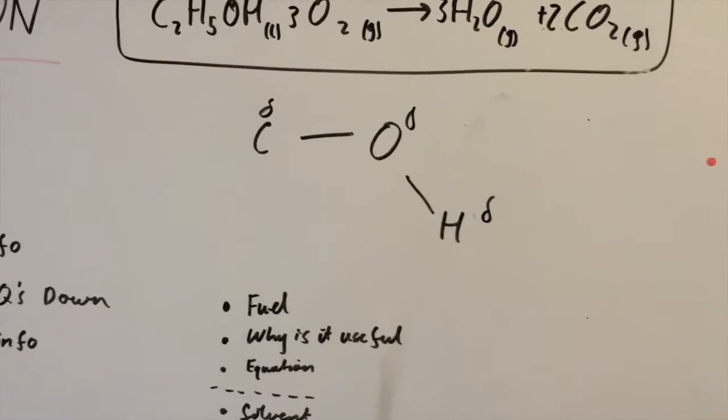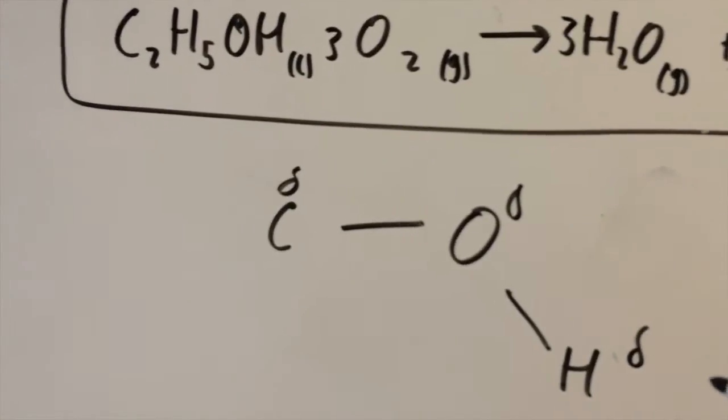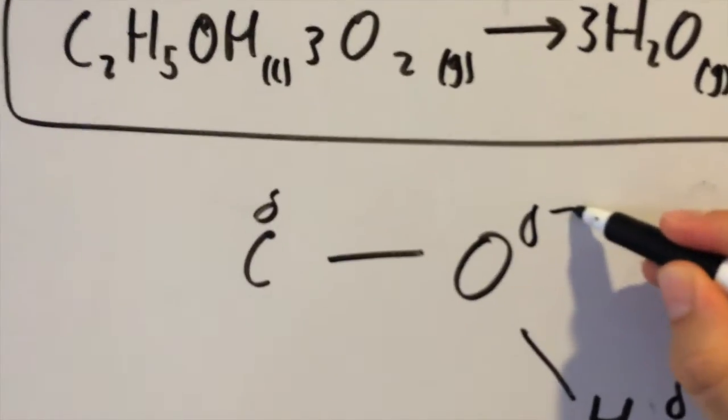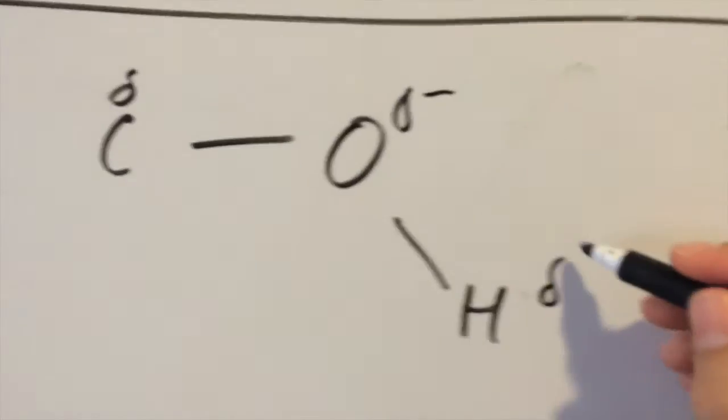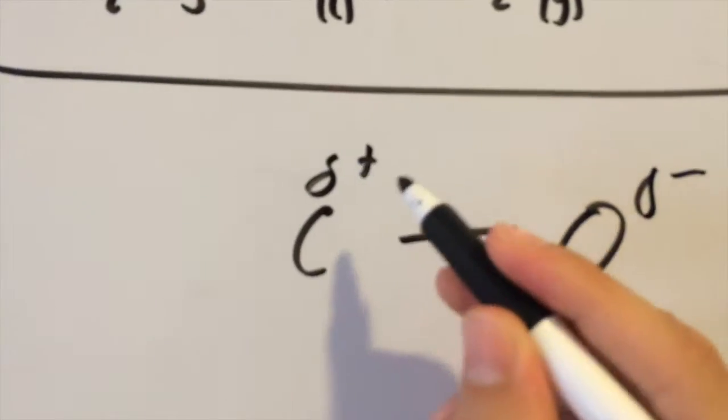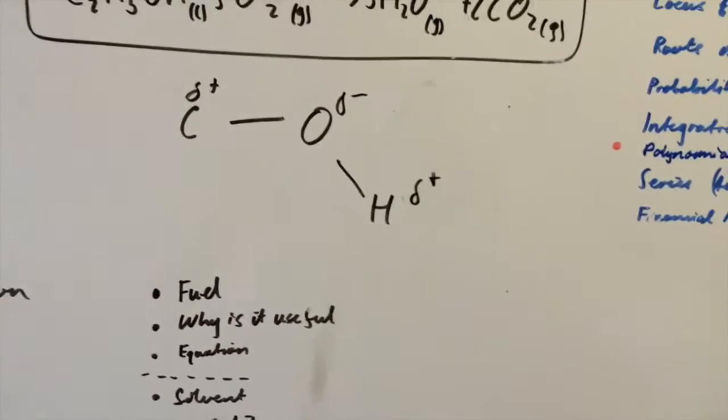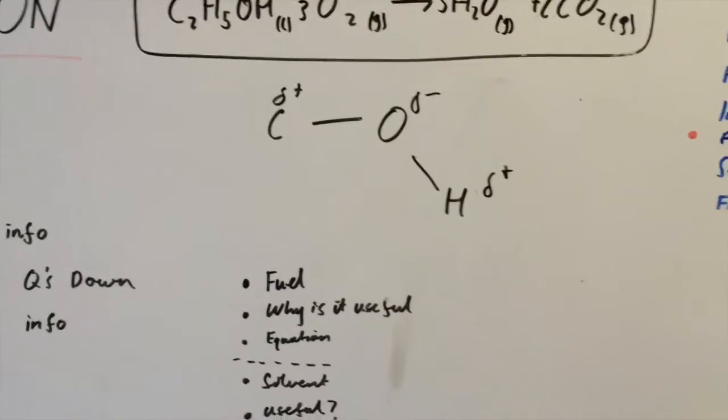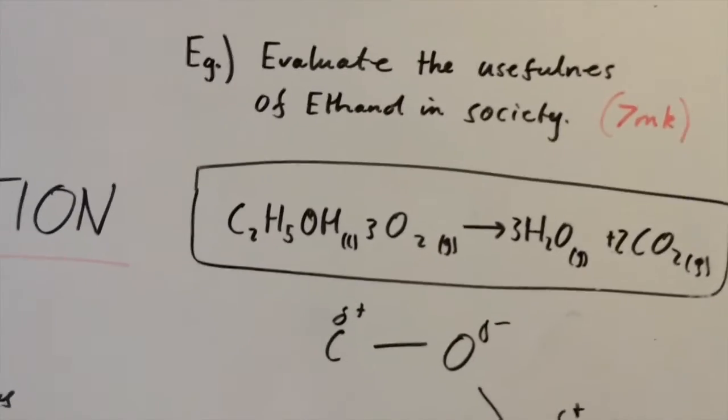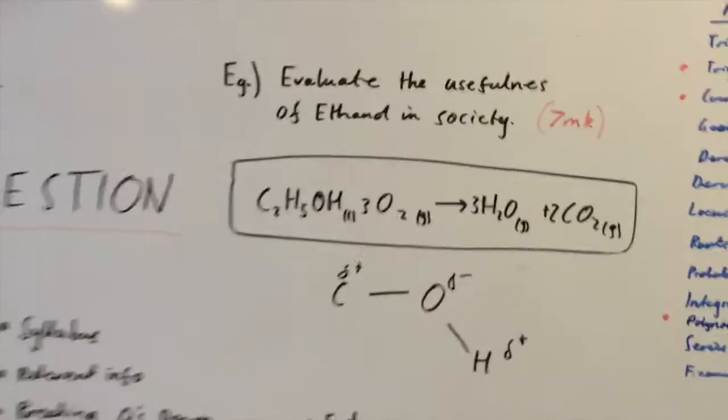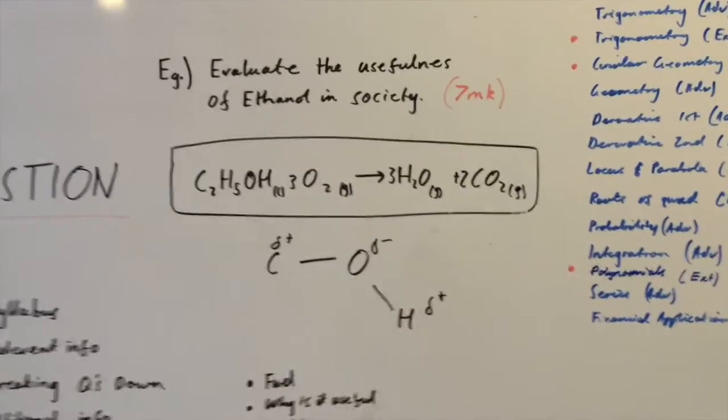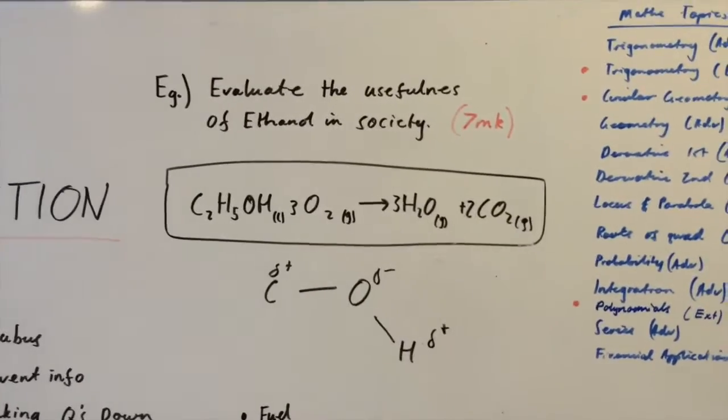Quickly give an overview of that and jump straight into a diagram because this just shows that it's polar, that's negative, that's positive and that's positive as well. So it just allows for polar interaction between molecules. Round it off in a quick sentence at the end relating back to the question and yeah, you've pretty much done your 7 marker.